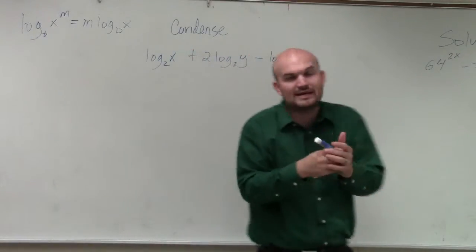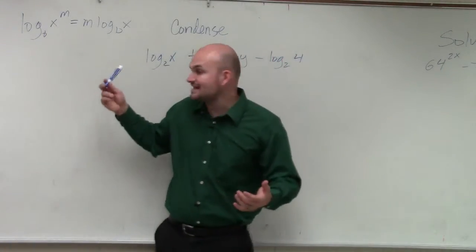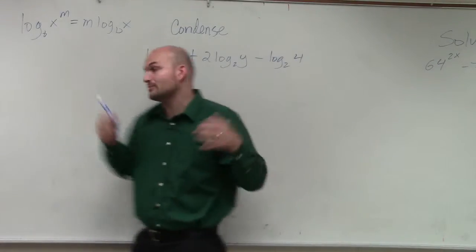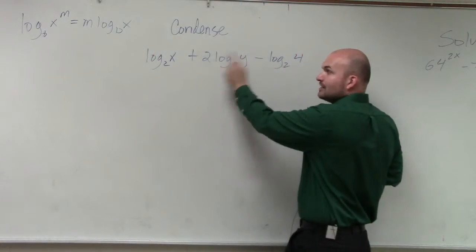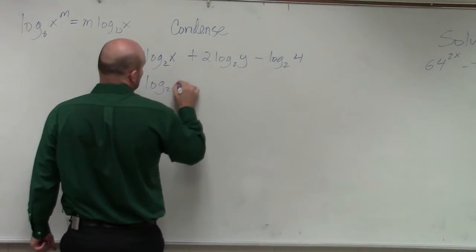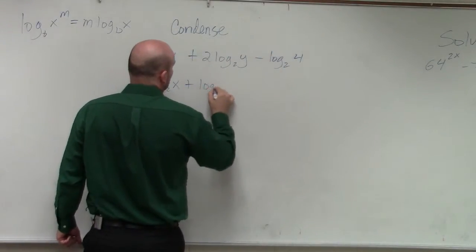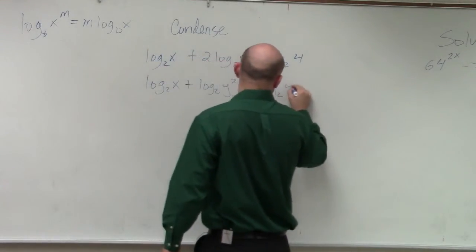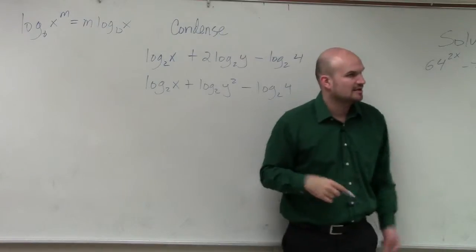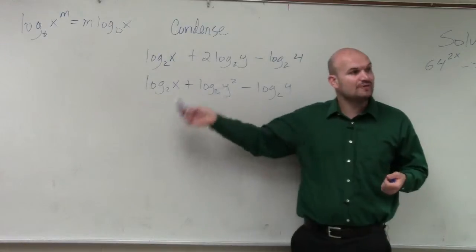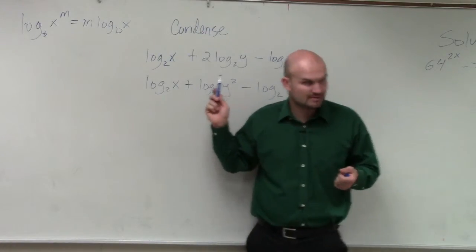The first thing we want to do, if you guys remember, the last thing we did is we took our exponent and we put it in front. Now, the first thing we're going to want to do is take any of our powers and rewrite them as exponents. So therefore, I have log base 2 of x plus log base 2 of y squared minus log base 2 of 4. Does everybody see what I did? Now I'm doing the reverse of expanding. I am condensing. So I'm taking any number that's in front and rewriting it as the power. Does everybody see that?